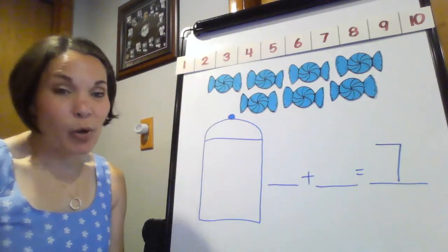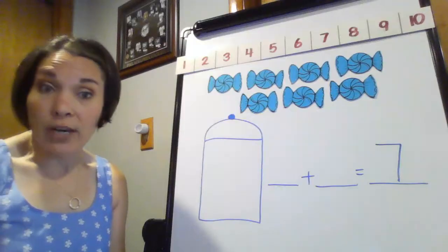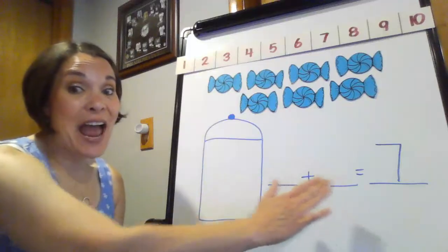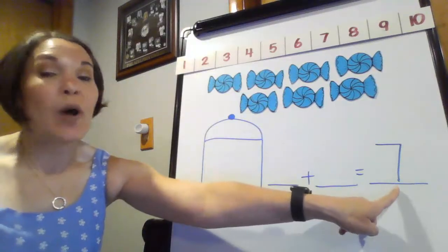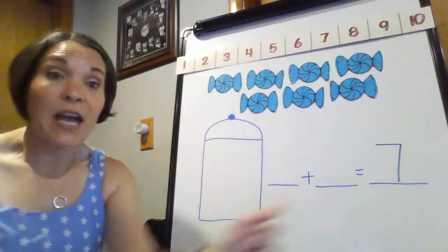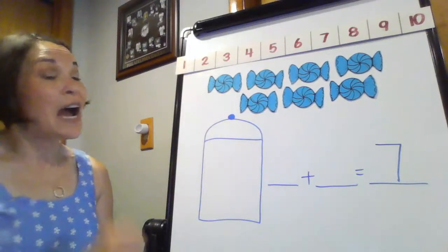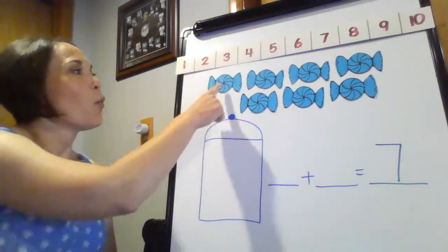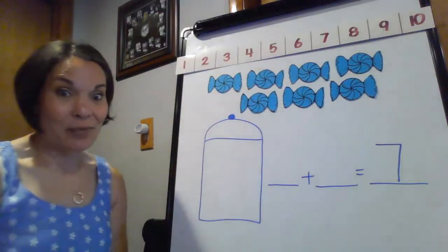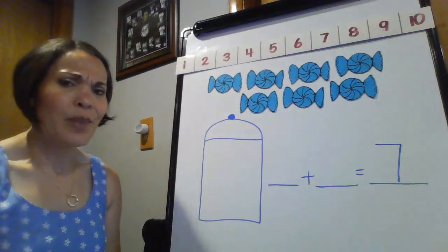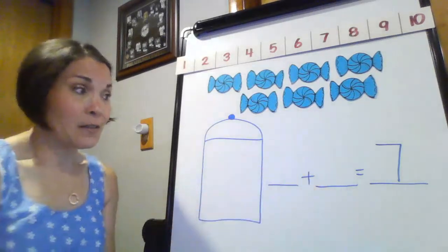Hi everybody, Mrs. Gorski back. Today we are going to be making number sentences or equations that will have two missing addends, and they are going to equal out to one specific whole number. In this case my whole number is seven. I have seven candies — one, two, three, four, five, six, seven. So you're probably thinking: how am I going to get these two addends to equal out to seven?